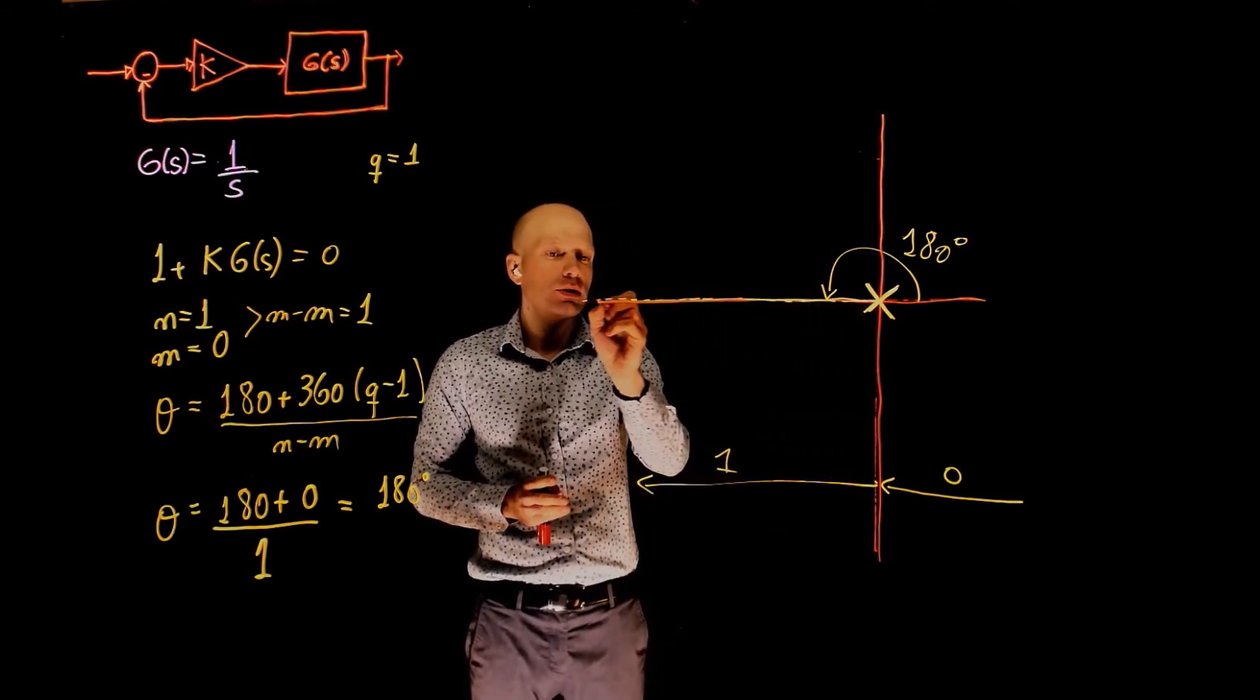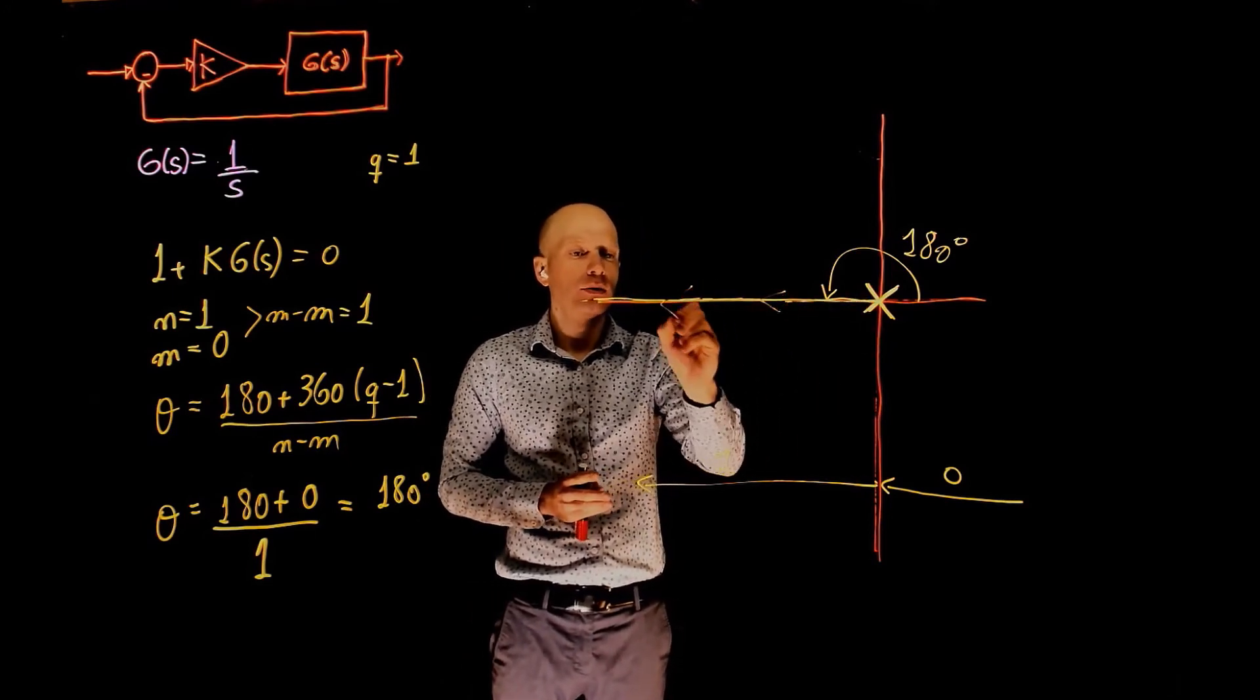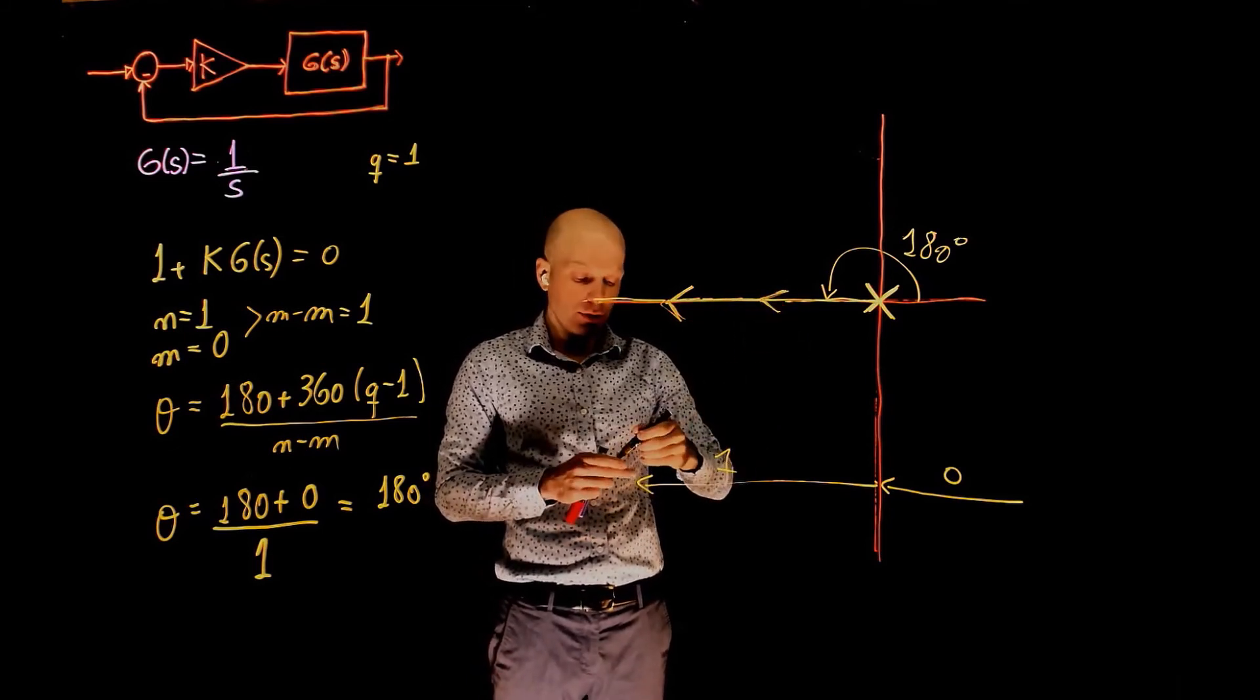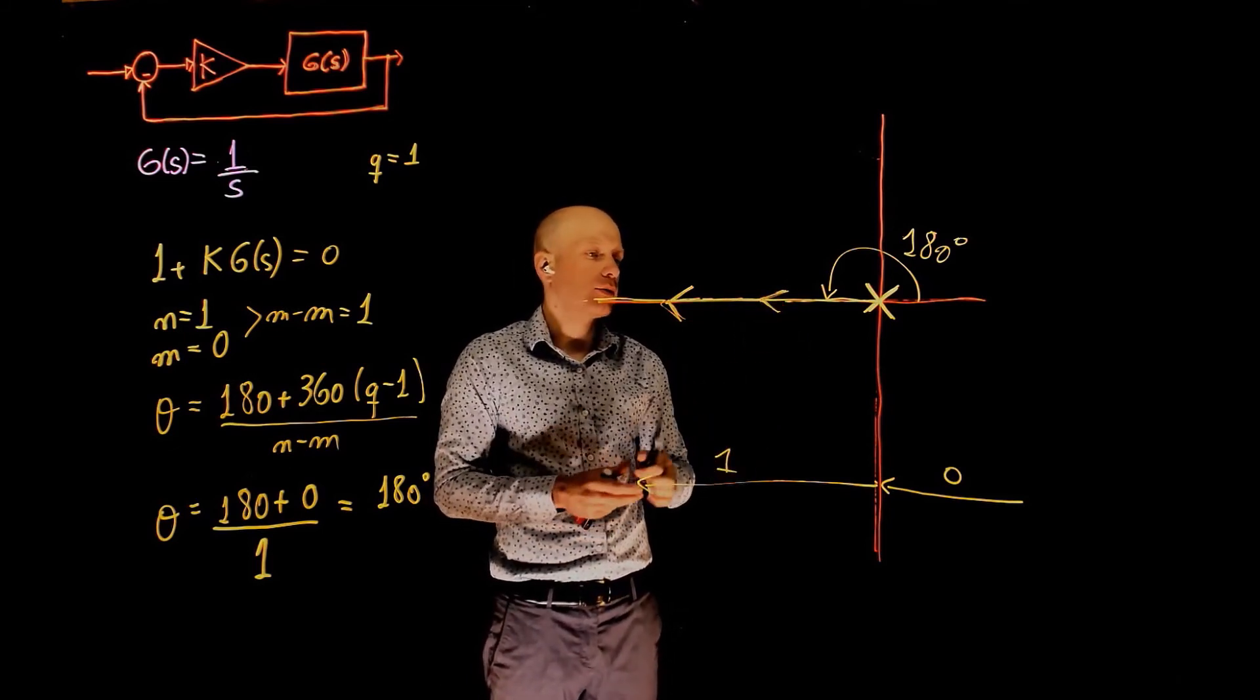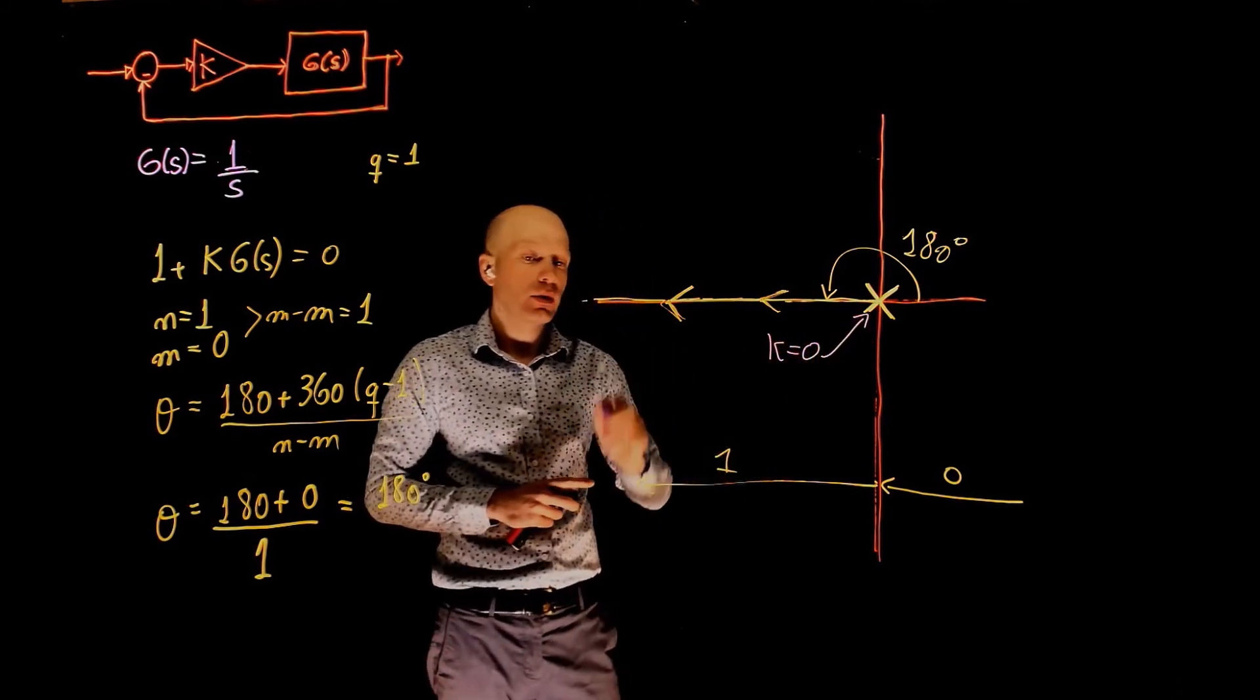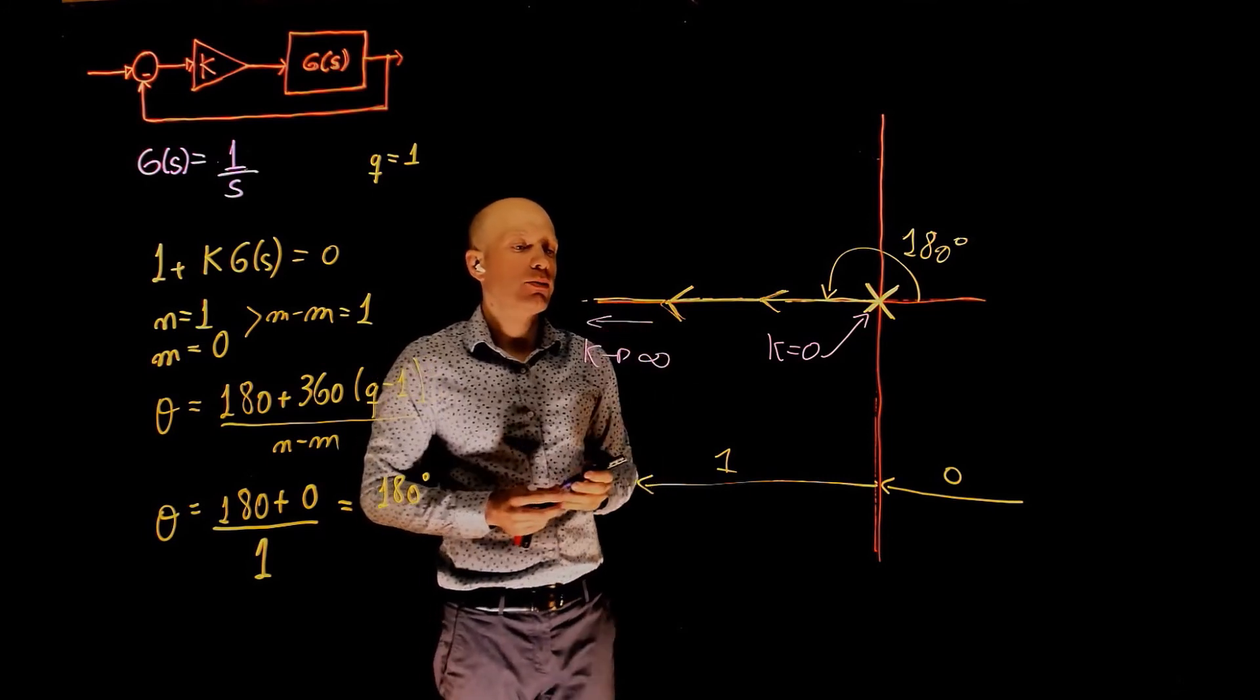Now the root locus is simply going from 0 to negative infinity as k tends from 0 to infinity. So k equals 0, the pole is right there, and k tending to infinity brings the pole to negative infinity.